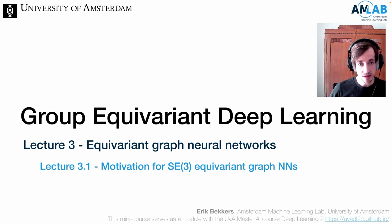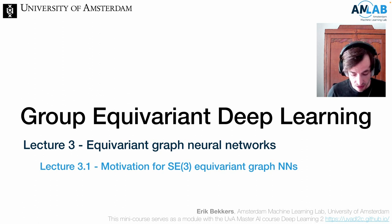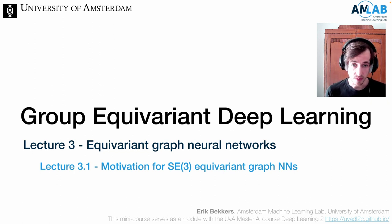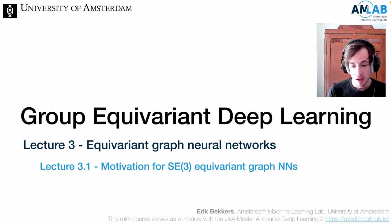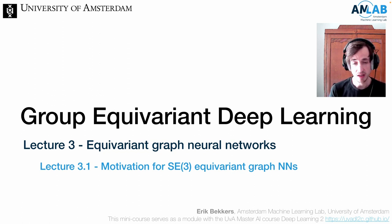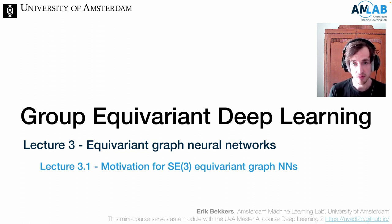Welcome back to this third lecture on group equivariant deep learning. In this sequence of videos, we're going to cover the topic of equivariant graph neural networks, where the previous videos focused primarily on the computer vision setting. When we move to the computational sciences, like computational chemistry, computational physics, but also medical image analysis, we need a more flexible framework than the CNN framework.